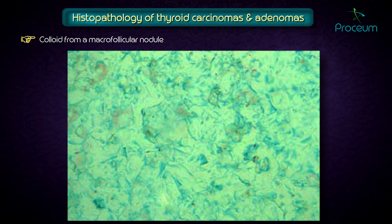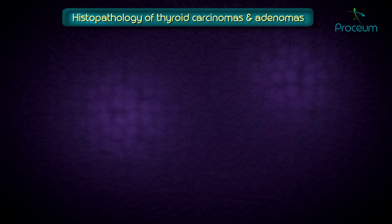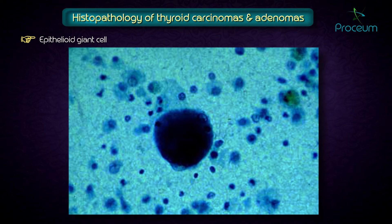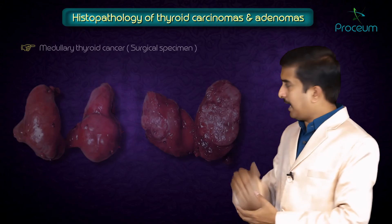The next image shows an epithelioid giant cell appearance on fine needle aspirate of the thyroid. This fine needle aspirate of papillary carcinoma of the thyroid shows an epithelioid giant cell.